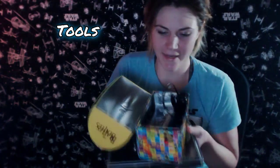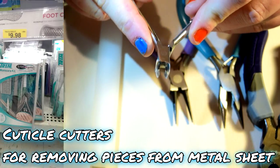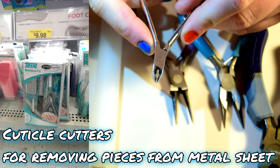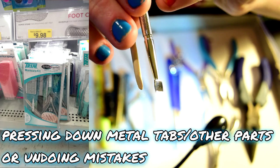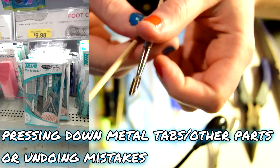Tools. Cuticle cutters for removing the pieces. I got those in a set with these other nail grooming items, and they're useful for a lot of different things.